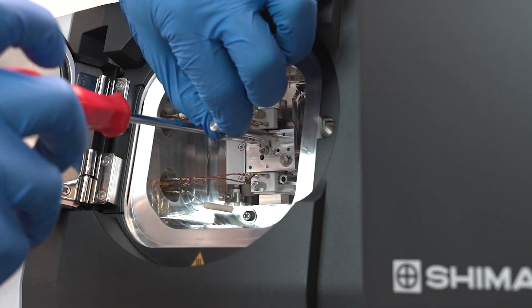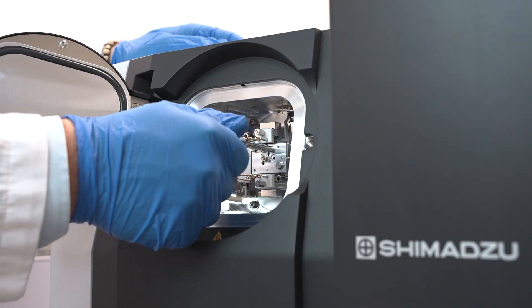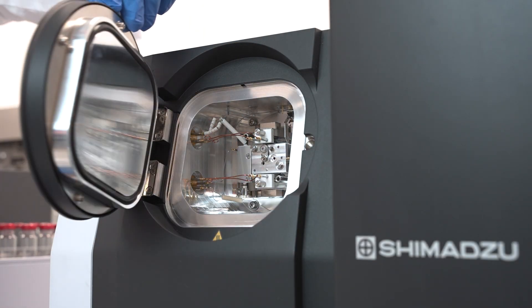After tightening, remove the jig by unscrewing, close the MS door, and you are ready to get your system back up and running.